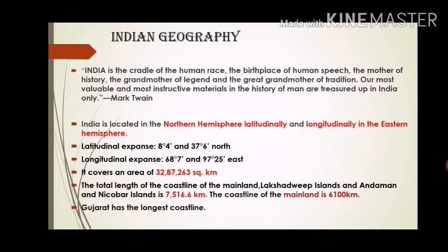Let's begin with the location of India. Latitudes are the horizontal imaginary lines and longitudes are the vertical imaginary lines. The equator equally divides the Earth into two hemispheres — the northern and southern hemisphere. Similarly, the zero degree Prime Meridian and the International Date Line equally divide the Earth into the eastern and western hemispheres.